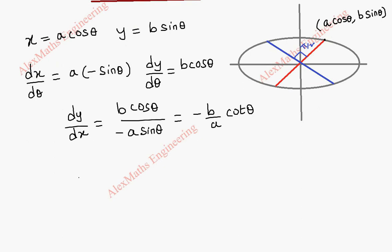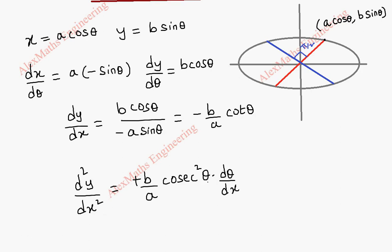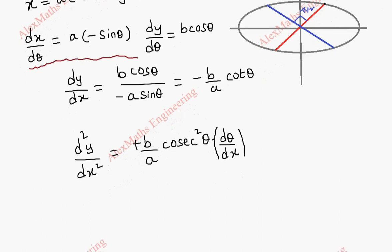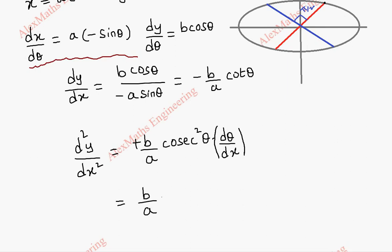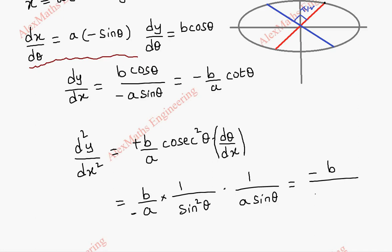From this we can find d squared y by dx squared, the second derivative. The constant minus b by a is kept as it is. The derivative of cot theta is minus cosecant squared theta, so we get plus cosecant squared theta, and by chain rule we multiply by d theta by dx. Substituting, cosecant squared theta is 1 by sin squared theta and d theta by dx is 1 over minus a sin theta. So finally d squared y by dx squared is minus b by a squared into sin cubed theta.